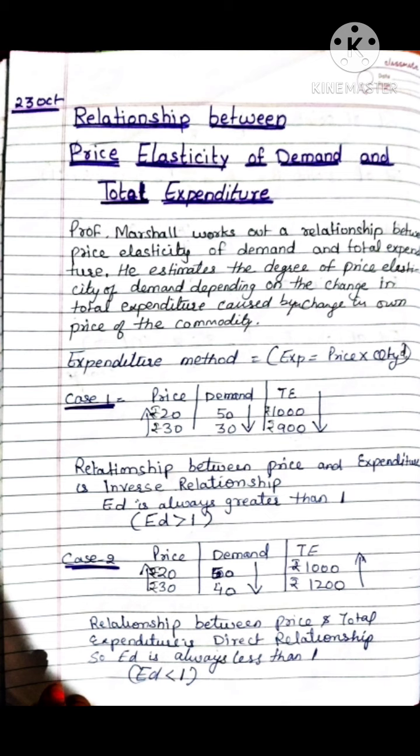Professor Marshall works out a relationship between price elasticity of demand and total expenditure. He estimates the degree of price elasticity of demand depending on the change in total expenditure caused by a change in the own price of the commodity. Marshall shows the price elasticity of demand and total expenditure relationship through three cases.